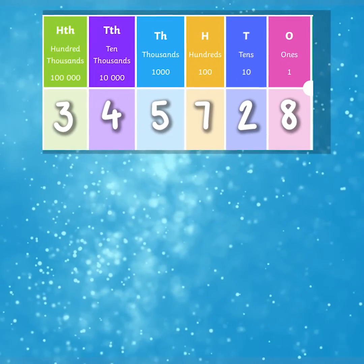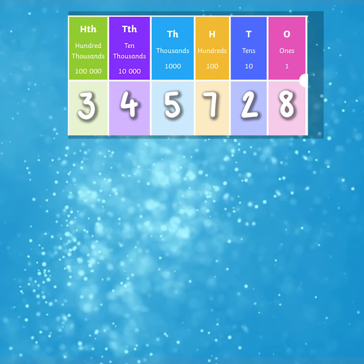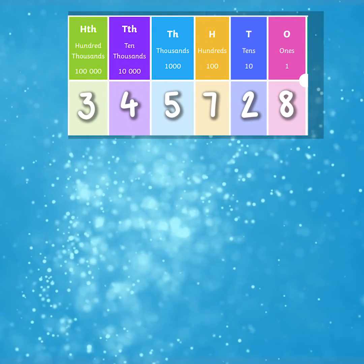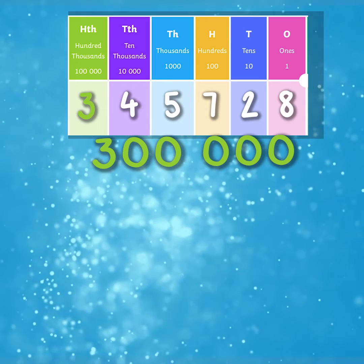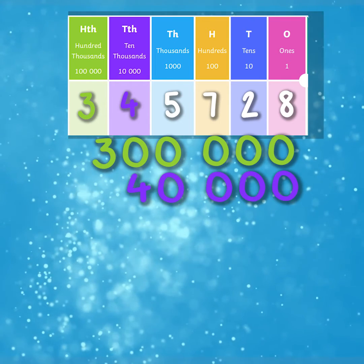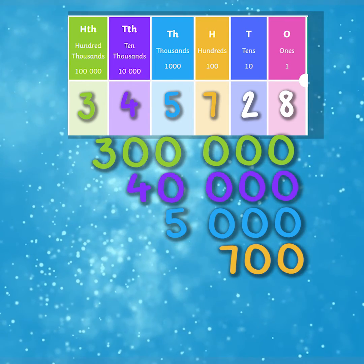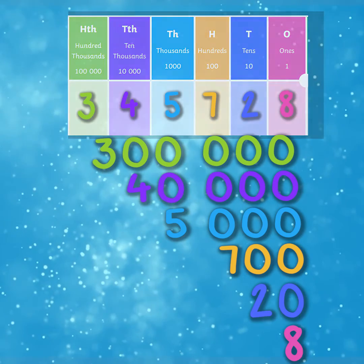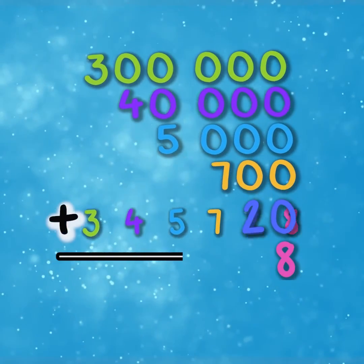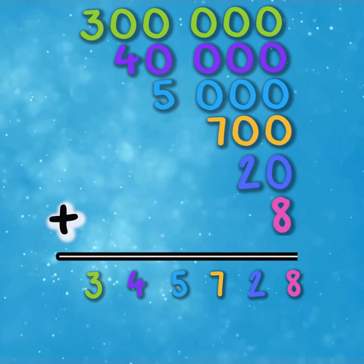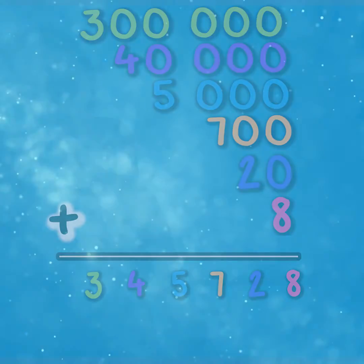To partition our number, we simply add up the value from each place value column. So we add three hundred thousand, forty thousand, five thousand, seven hundred, twenty and eight, which makes three hundred and forty-five thousand, seven hundred and twenty-eight.